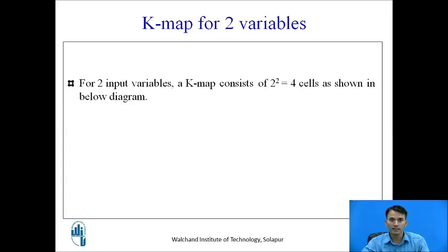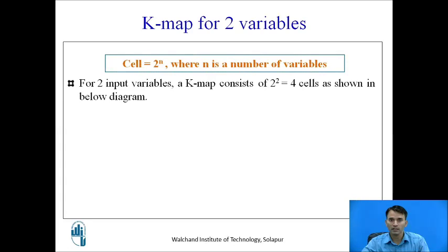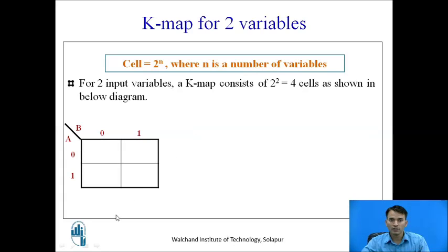For 2 input variables, K-map consists of 2 raised to 2 cells, that is 4 cells. To know how many cells are there, we use the formula: cells = 2 raised to n, where n is the number of variables. So you can see the structure for 2 input variables where a and b are the 2 variables, where a may have value 0 or 1 and b also having value 0 or 1.